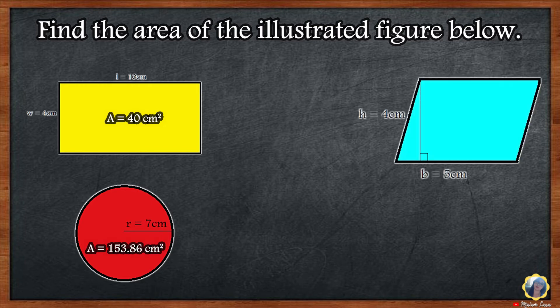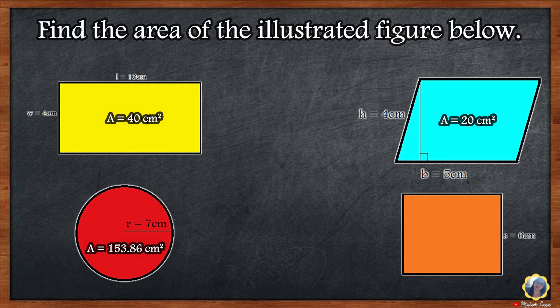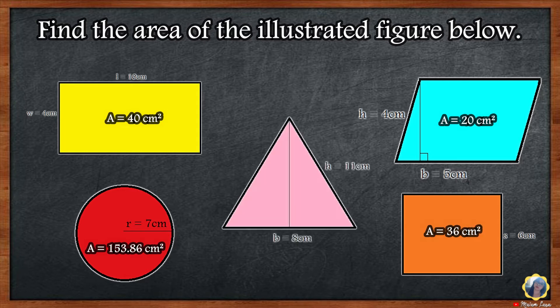Parallelogram: Base times height, 5 cm times 4 cm is equal to 20 square centimeters. Square: Side times side, or side squared, 6 times 6 is equal to 36 square centimeters. Triangle: Base times height divided by 2, 8 cm times 11 cm is equal to 88 square centimeters, divided by 2 is 44 square centimeters.